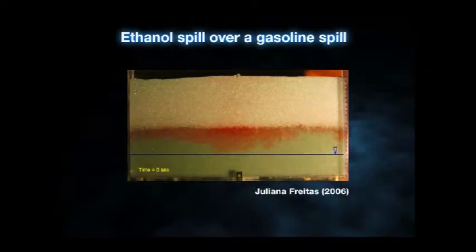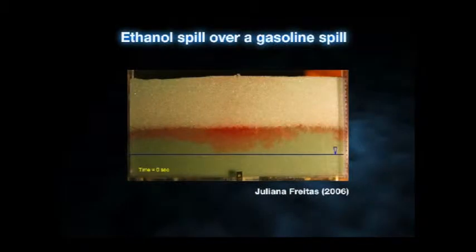Welcome back. This is our fifth class on co-solvents and how it happens. We're watching a spill of gasoline on top of the capillary fringe, and now we're going to make it a bit more difficult and improve the concepts we've developed. We have our spill from the previous class where gasoline sits on top of the capillary fringe — gasoline was dyed red so we could see it — and now we're going to spill ethanol over it.